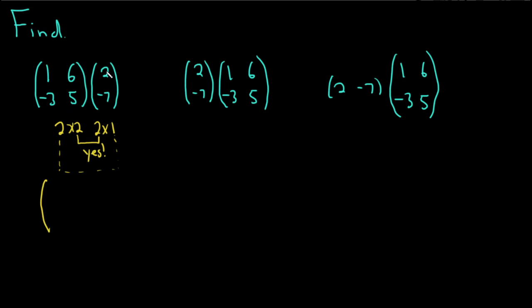So we do 1 times 2 plus 6 times negative 7. Right? Because this is the entry in the first row, first column, so we use the first row, first column. Now, this is the entry now, where my cursor is. This is in the second row, first column. So we use the second row, first column. Negative 3 times 2 plus 5 times negative 7.